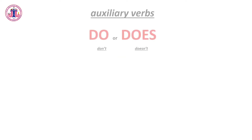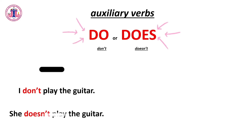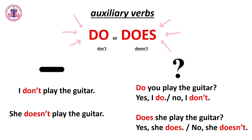Let's keep talking about the auxiliaries 'do' and 'does.' 'Don't' is the negative of 'do,' and 'doesn't' is the negative of 'does.' For example: I don't play the guitar; she doesn't play the guitar. For questions: do you play the guitar? You answer: yes, I do, or no, I don't. In the third person: does she play the guitar? You answer: yes, she does, or no, she doesn't.